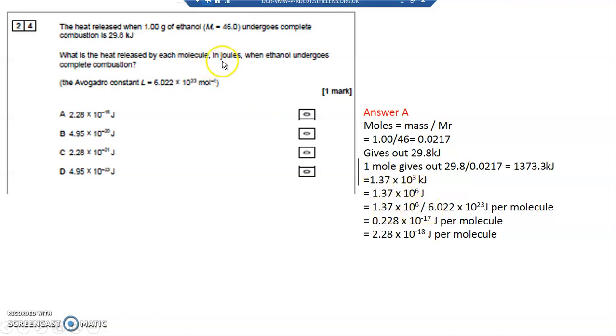And then it wants to know per molecule. I've got Avogadro's constant is the number of molecules in a mole, and I want it for just one of them. So I've got to divide by 6.022 times 10 to the power 23 to work out the energy given out by just one molecule. And it comes out as 0.228 times 10 to the minus 17, or 2.28 times 10 to the minus 18, which is answer A.